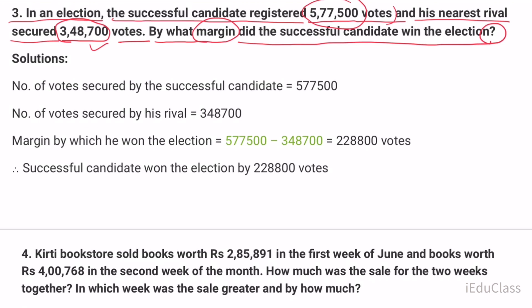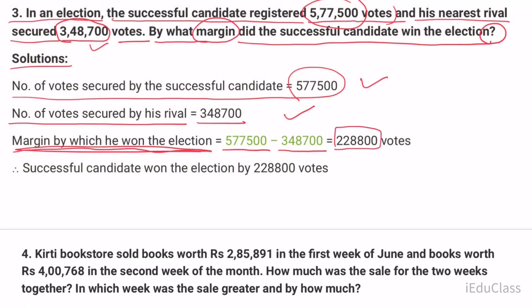Solution: Number of votes secured by the successful candidate is 577,500. Number of votes secured by his rival is 348,700. Margin by which he won the election is 577,500 minus 348,700 equals 228,800 votes. Successful candidate won the election by 228,800 votes.